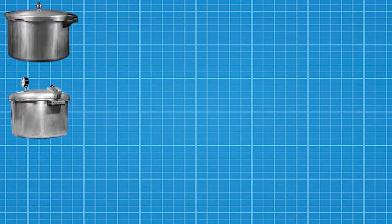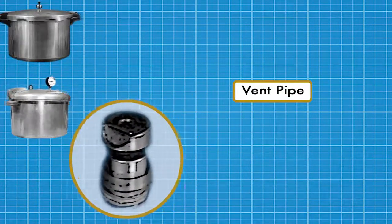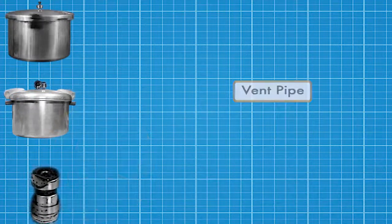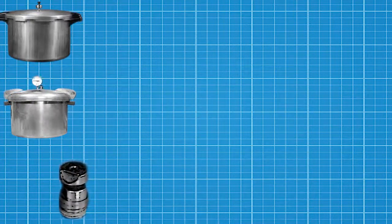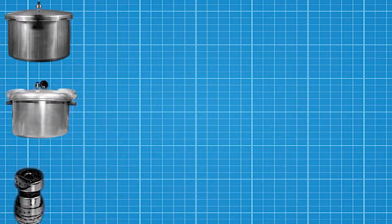All canners will have a vent pipe that allows air to vent from the canner before you bring it up to pressure. Make sure this remains free from food or debris so air and steam can escape.